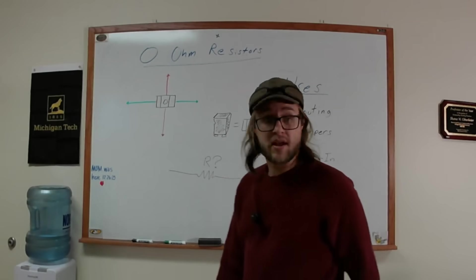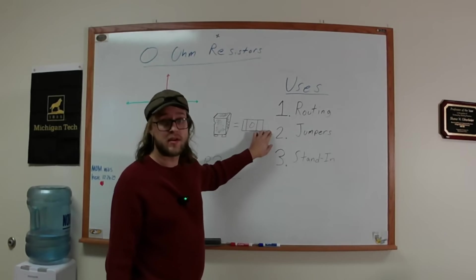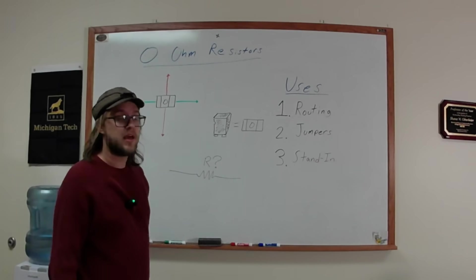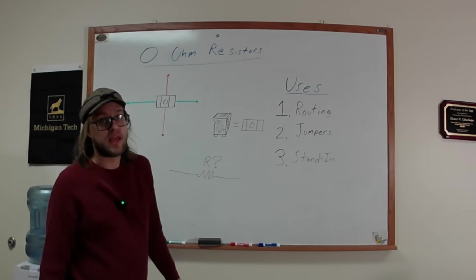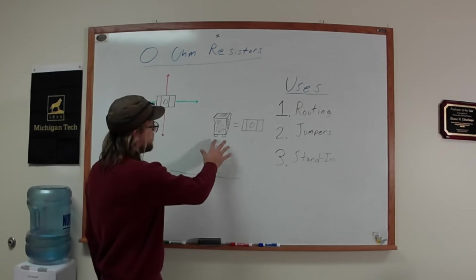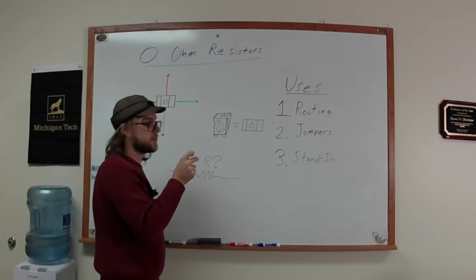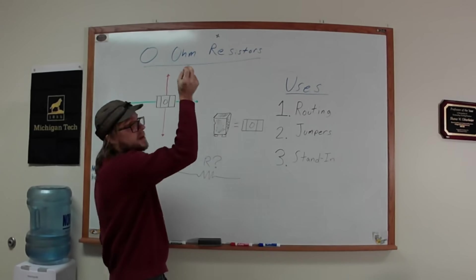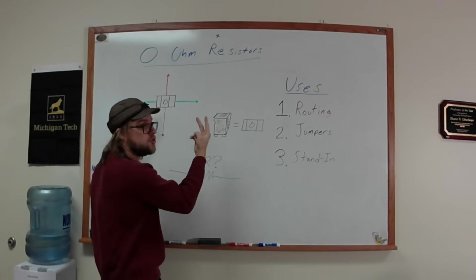The next way or the next thing that we can use it for is jumpers. If you've ever assembled a computer or worked with really any configurable electronics, you've probably seen these jumpers. They look like little black towers that you can take off and underneath you see these two pins.